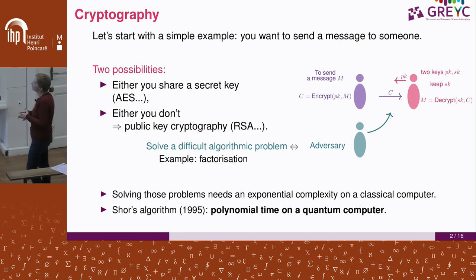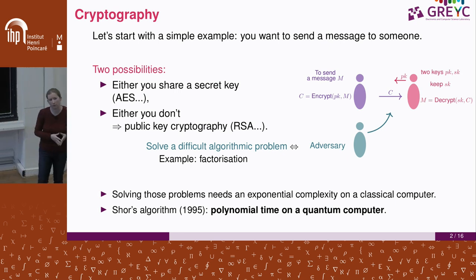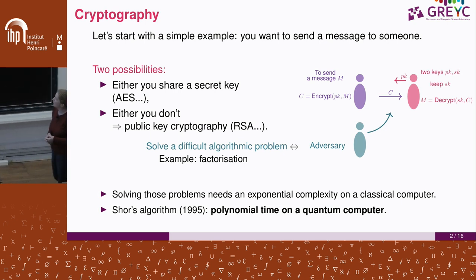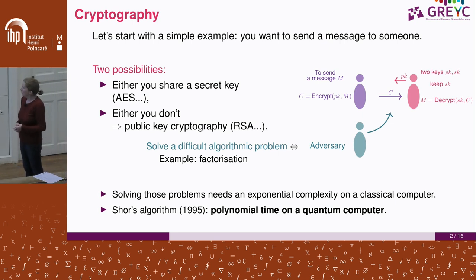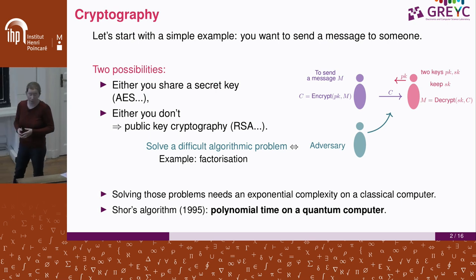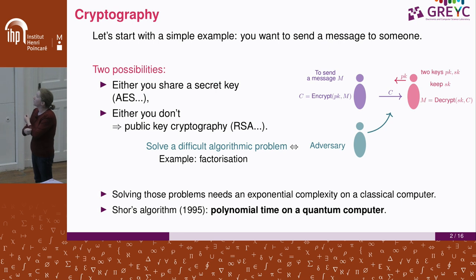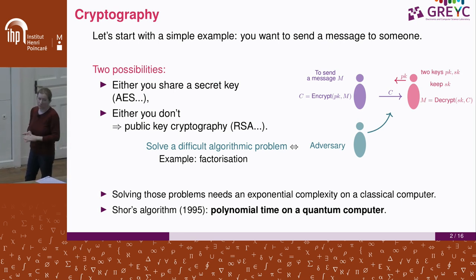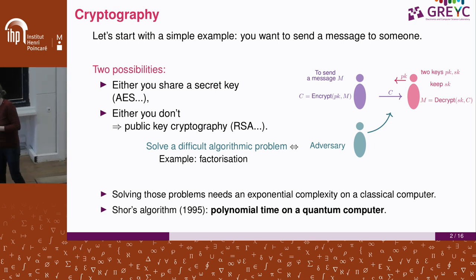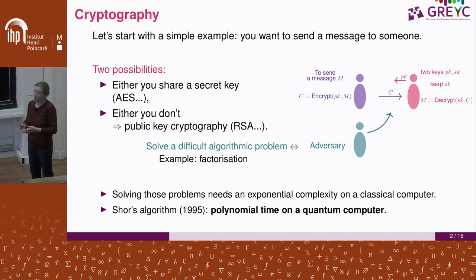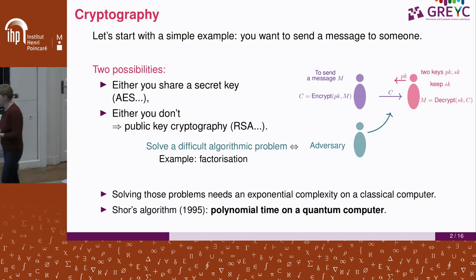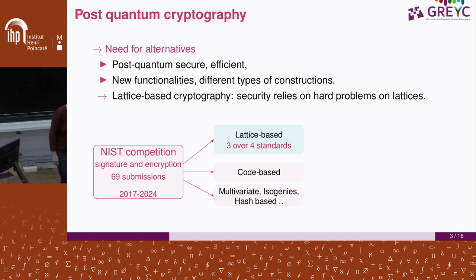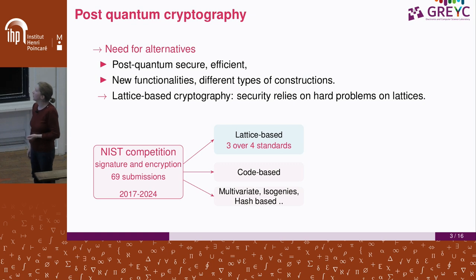We need difficult algorithmic problems. A simple example is factorization for RSA; another is the discrete logarithm for ElGamal. In lattice-based cryptography, which is my research topic, we consider a problem on lattices. Why consider alternatives to factorization and discrete logarithm? Those problems need exponential complexity on classical computers, but with a powerful enough quantum computer, factorization and discrete logarithm become easy — polynomial time — so we don't want to rely on them.